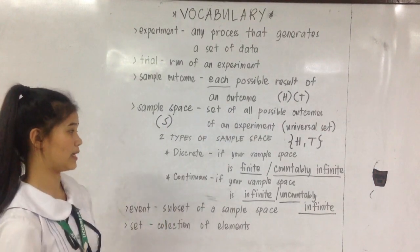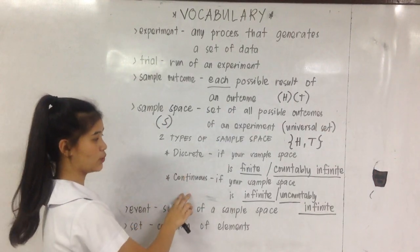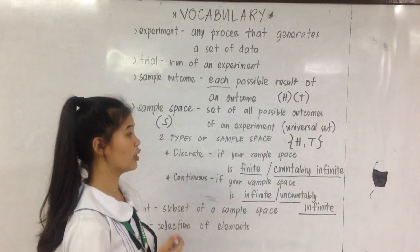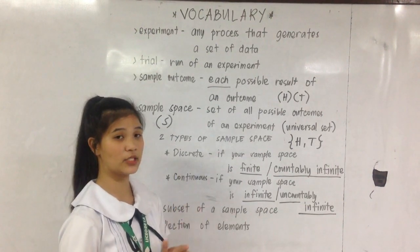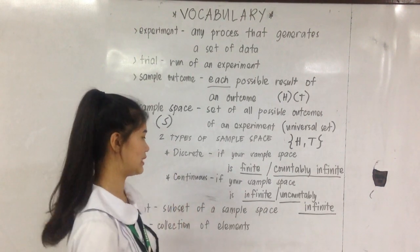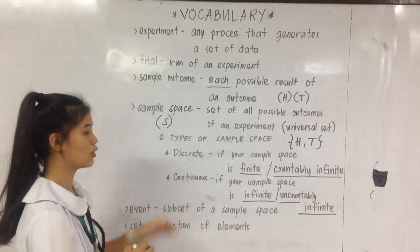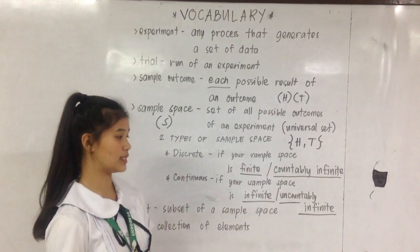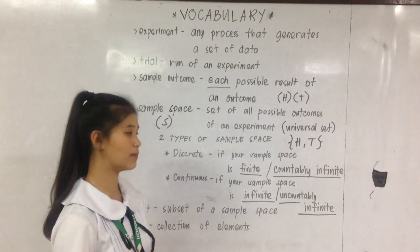There are two types of sample space, discrete or continuous. Discrete if your sample space is finite or countably infinite. Next is continuous if your sample space is infinite or uncountably infinite.